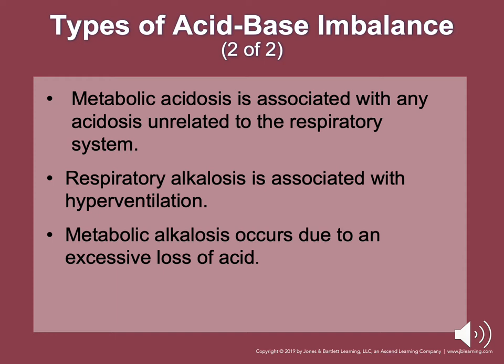Metabolic alkalosis occurs due to an excessive loss of acids. It can be acute or chronic but is not typically an acute condition — it takes time, however it can develop in a chronically ill patient. For example, a patient who has been vomiting for a long time and drinking too much water because they feel dehydrated. Signs and symptoms include confusion, muscle tremors and cramps, and hypotension.